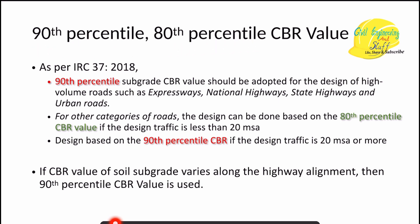Moving on, as per IRC 37 published in 2018, the 90th percentile subgrade CBR value should be adopted for the design of high-volume roads such as expressways, national highways, state highways, and urban roads. For other categories of roads, the design can be based on the 80th percentile CBR value if the design traffic is less than 20 MSA. If design traffic exceeds 20 MSA, the 90th percentile CBR value must be used.